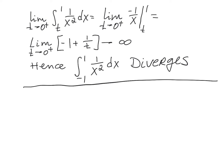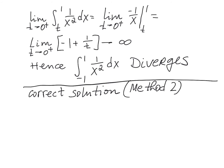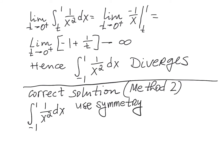Now let's do Method 2. You have to be careful with this method: if you're not sure about symmetry, you should not use it. As seen from the graph, 1 over x squared is an even function, so it is symmetric with respect to the y-axis. Using symmetry, we can rewrite the integral from minus 1 to 1 of 1 over x squared as 2 times the integral from 0 to 1 of 1 over x squared.